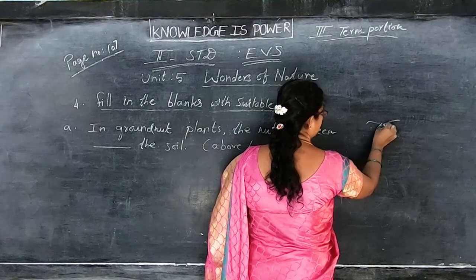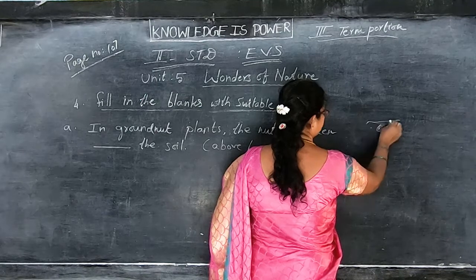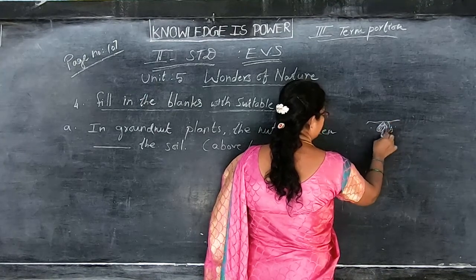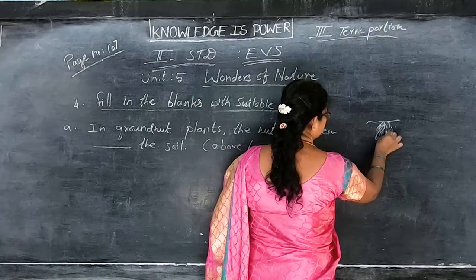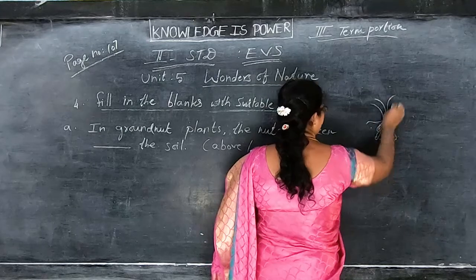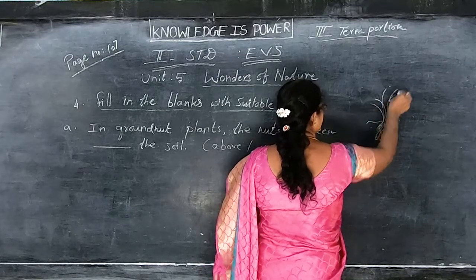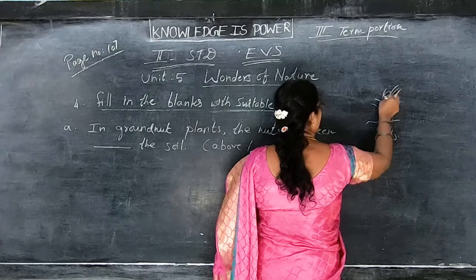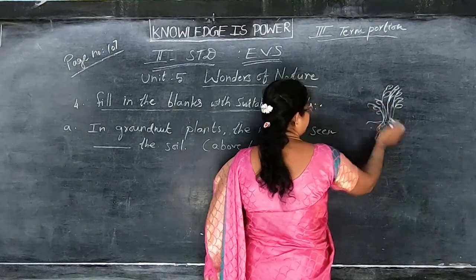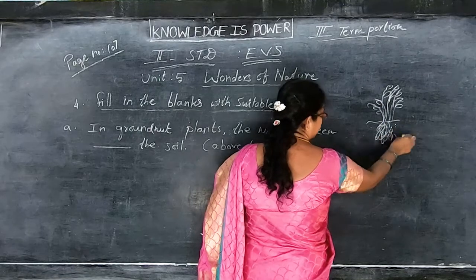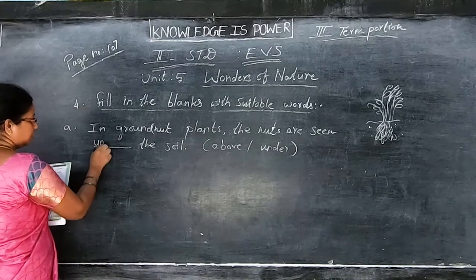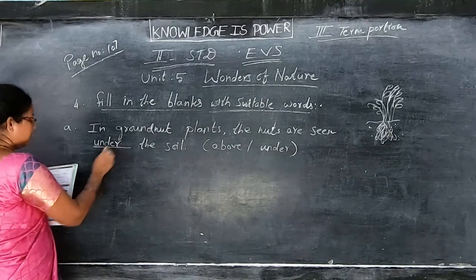Groundnut will be in a bunch, growing down under the root. The groundnut seed will be seen under the soil. So the answer is under — U-N-D-E-R.